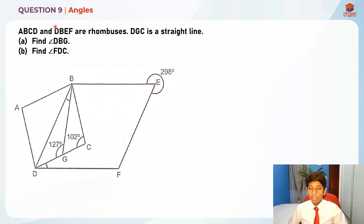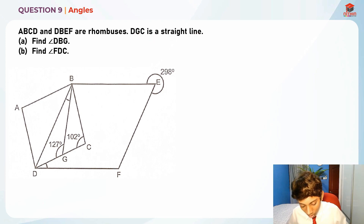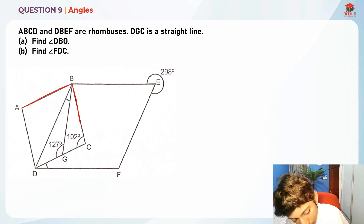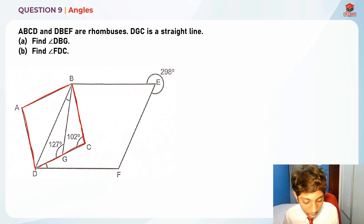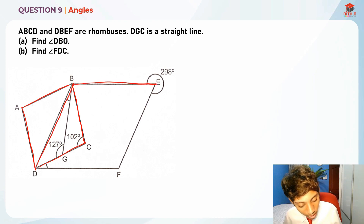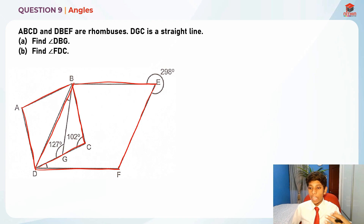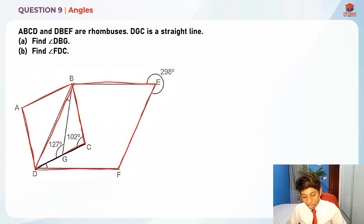Let's read the question first. ABCD and DBEF are rhombuses, and DGC is a straight line. So ABCD is a rhombus and DBEF is also a rhombus — these two are rhombuses — and the line DGC is actually straight. This is the information that we know right now.